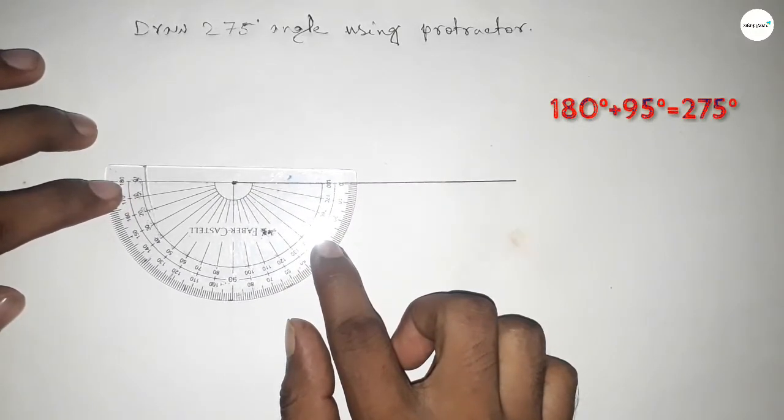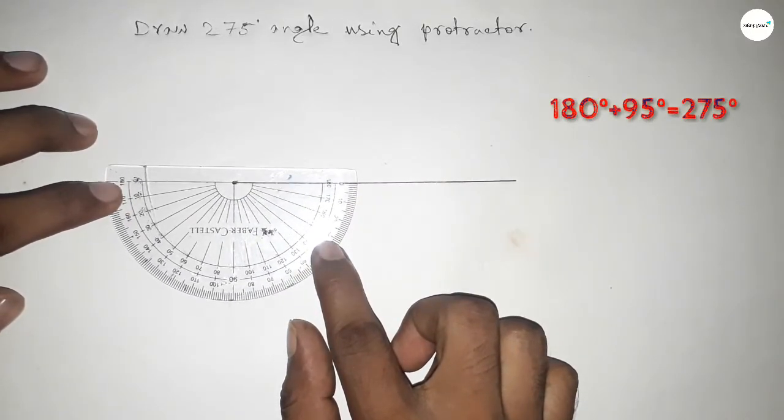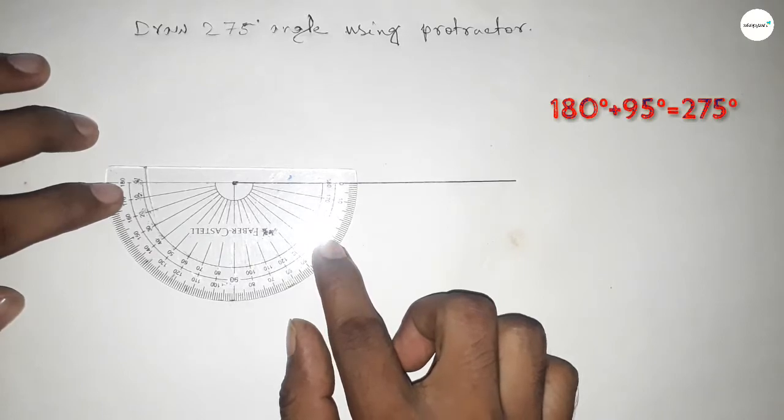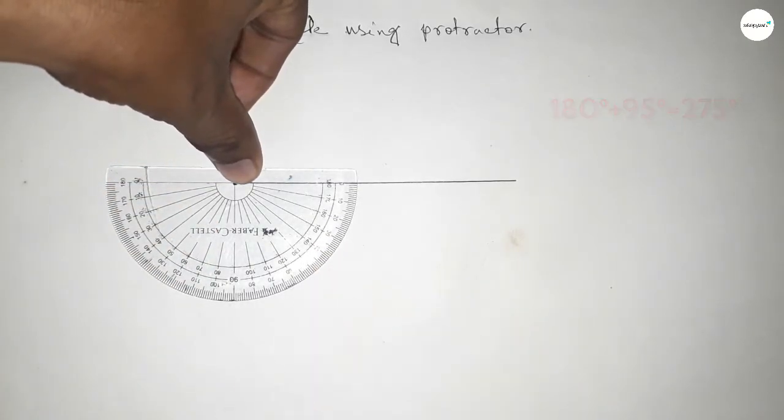If we add 95 degree angle with 180 degree, then we can get 275 degree angle.